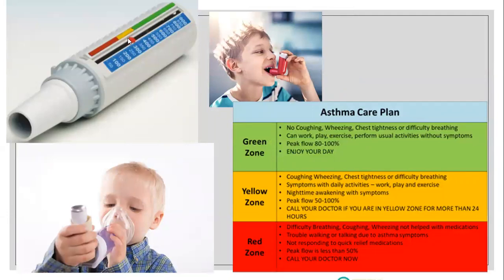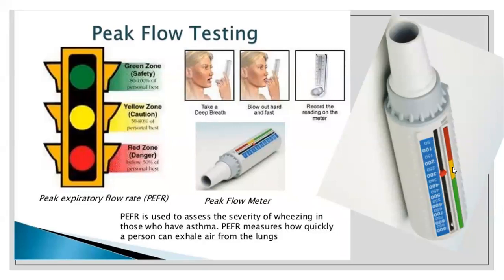This device is called a Peak Flow Meter. It has three zones: red, yellow, and green. To use it, take a deep breath, blow out hard and fast into the meter, and see which zone the indicator reaches. If it touches green, you are safe. If it is in yellow, you need precaution — with good medication management, it should return to green. If you neglect medication or avoid exposure to triggers, it will go to the red zone, which is a danger sign.